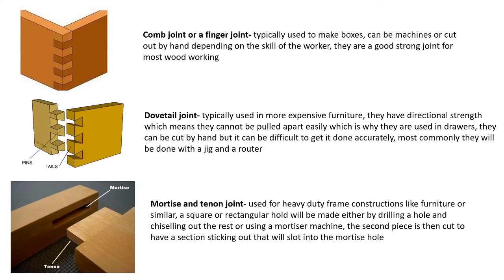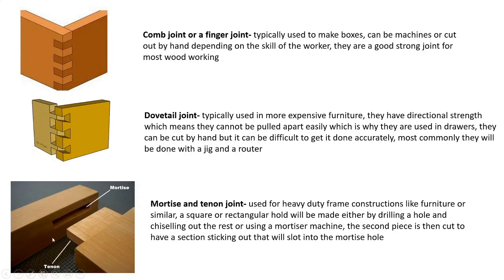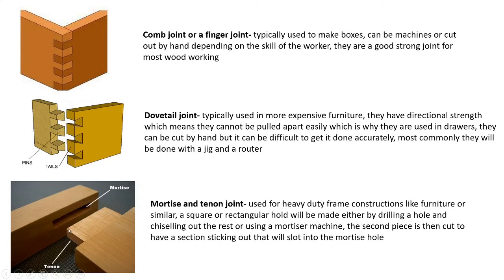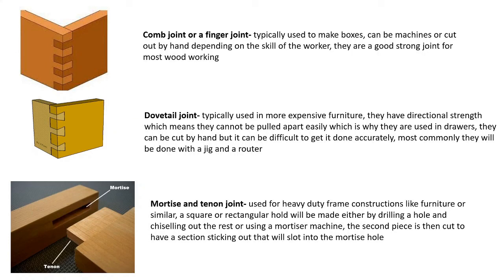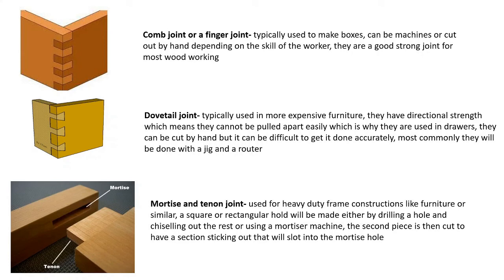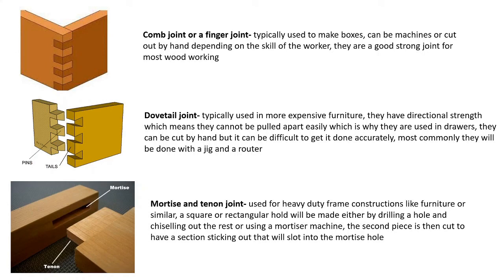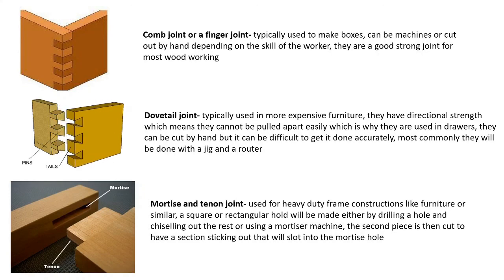A mortise and tenon joint is used for heavy-duty framing and is incredibly strong when reinforced with glue. The mortise is the square hole — you can use a mortiser to drill square holes, or drill multiple round holes and chisel out the waste. The tenon is the piece that slots into the hole, cut with a tenon saw or band saw. Glue on both sides and clamped together gives a large gluing surface area. There's no fixed size — it depends on the piece being made.